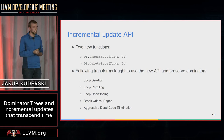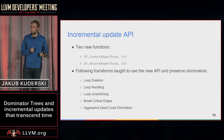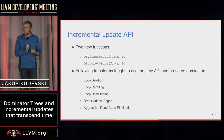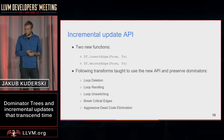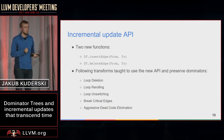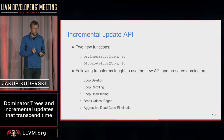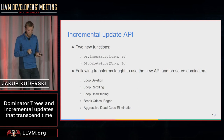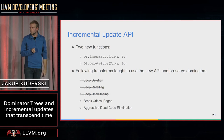I used those pieces of API to battle-test the incremental updater and updated some of the passes. It seems to work quite well — it was fast, I was able to bootstrap LLVM and Clang, and compile the whole test suite.